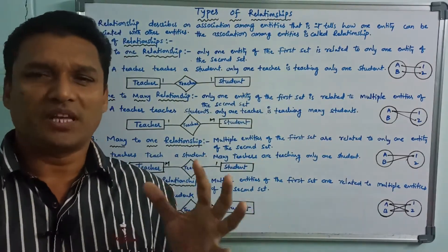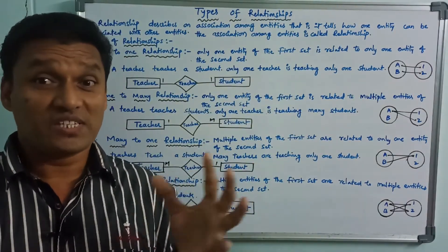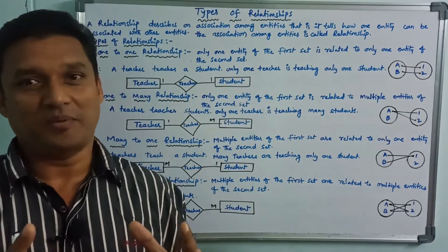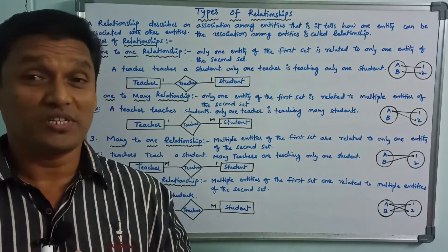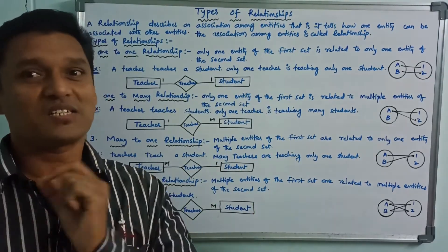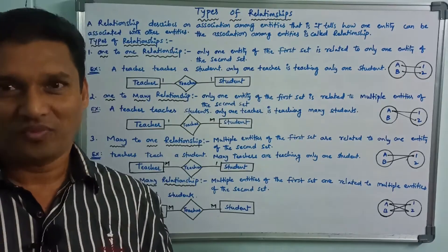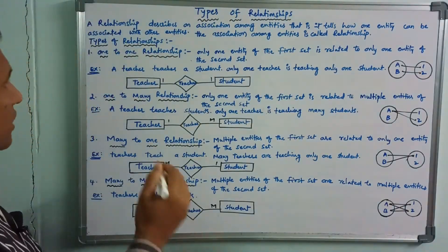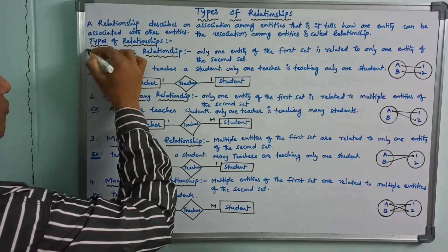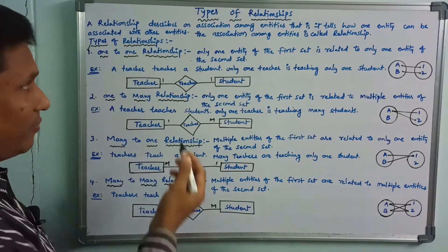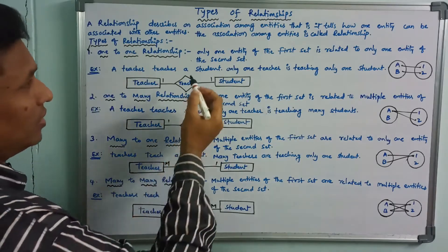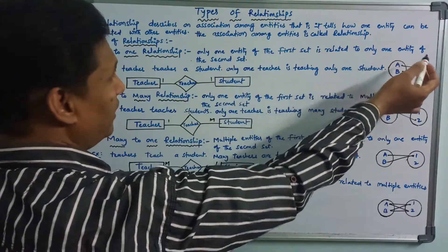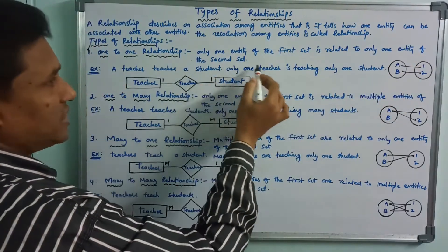Two entities have an association and communication — that is called a relationship. First one: one-to-one relationship. Only one entity of the first set is related to only one entity of the second set.